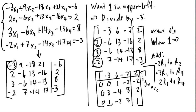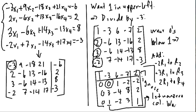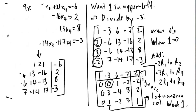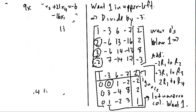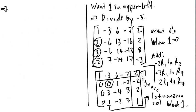We're going to ignore that very top row and look for the first non-zero column, which is 0, 3, 1. We want to get a 1 at the top of it. But we've got a 0 there — we could either flip or divide, but I can't divide by 0. So there's really only one thing to do. I've got a 1 in the bottom row as its very first entry in that column, so I'm going to swap rows 2 and row 4.